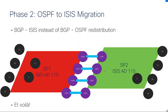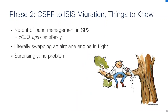Of course for the ASBRs we had to change the mutual redistribution — distributing BGP into ISIS instead of OSPF. And at the end it just worked. Just make sure you test everything in the lab to gain confidence, and once you are ready follow your plan. Not many lessons learned really because it worked as expected. The tricky part was management: SP2 had no dedicated out-of-band management network, so routers were reachable via transport loopbacks — we were literally swapping the engine in-flight but it never caused any loss of access.